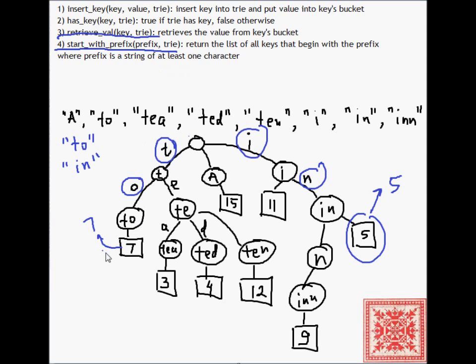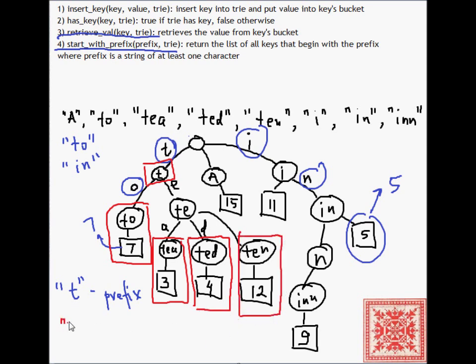Start with prefix. Let's say that we are given the prefix t. We want to find all of the strings in the Trie that begin with t. So we've reached from the top node, we've reached this node, and then we get all of the buckets in the subtree rooted at t: to, ten, ted, and te. To, te, ted, and ten.